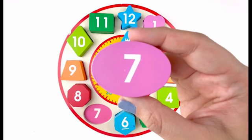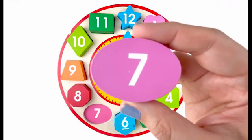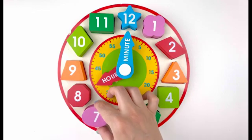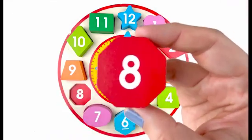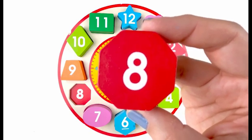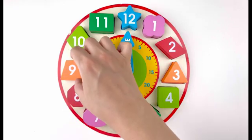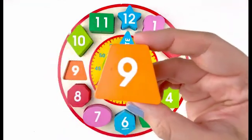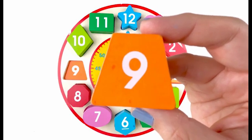Number seven. This number seven is on a pink oval. Number eight. This number eight is on a red octagon. Number nine. This number nine is on an orange trapezoid.